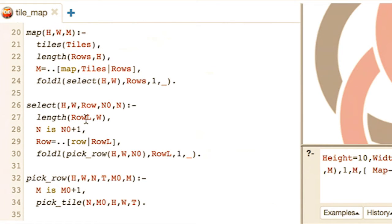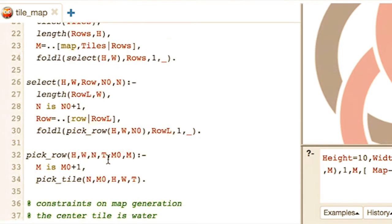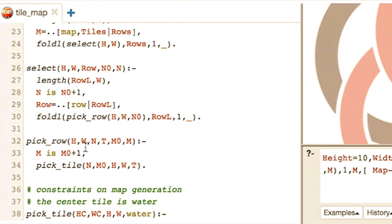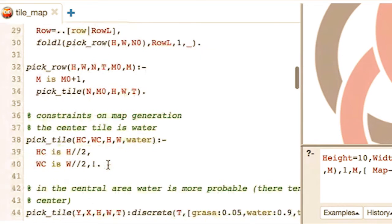For each row, you have again a call to Foldel, which calls the predicate pick row, which is in charge of picking tiles one by one. Picking tiles is made by predicate pick tiles, which takes as input the height and the width of the map.